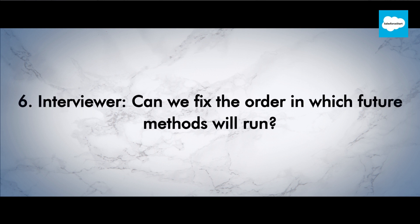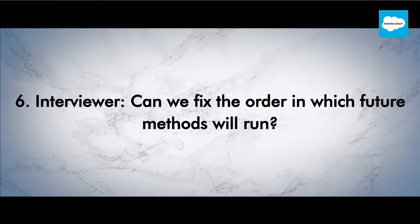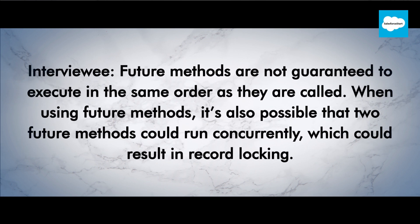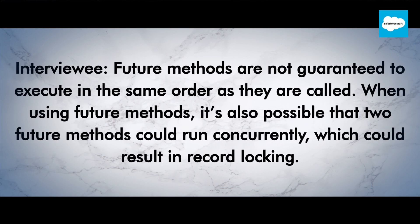Interviewer: Can we fix the order in which future methods will run? Interviewee: Future methods are not guaranteed to execute in the same order as they are called. When using future methods, it's also possible that two future methods could run concurrently, which could result in record locking.